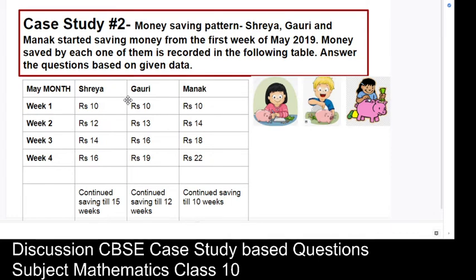Now let us move on to another interesting case study depicting a money saving pattern. Shriya, Gauri, and Manak started saving money from the first week of May 2019. Shriya started saving with rupees 10, Gauri with rupees 10, and Manak with rupees 10. In week 2, Shriya saved 12 rupees, Gauri saved 13 rupees, and Manak saved 14 rupees. Shriya continued saving for 15 weeks, Gauri for 12 weeks, and Manak for 10 weeks.